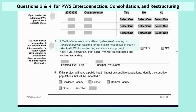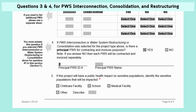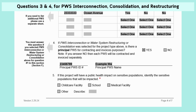Question 4: If this project includes the interconnection, restructuring, or consolidation of a PWS, is there a Principal PWS for contracting and invoicing purposes? If yes, check the correct box and provide the Principal PWS ID number and name. If no, check the box next to no — note that if the answer is no, each PWS will be contracted and invoiced separately. For our example, there is a Principal PWS and it is our own PWS, so I will check yes and enter our PWS ID number and name.